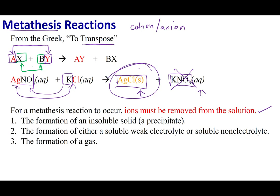The way that ions can be removed is if I form an insoluble solid, a precipitate, or I can form a non-electrolyte, because non-electrolytes do not break up into ions, or I form a gas. In the next lecture, we're going to focus on precipitation reactions.